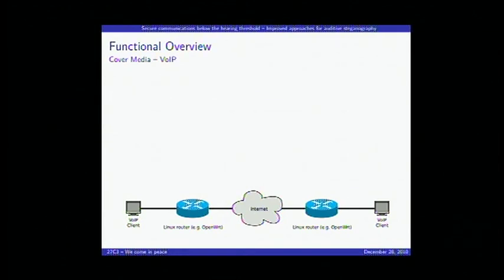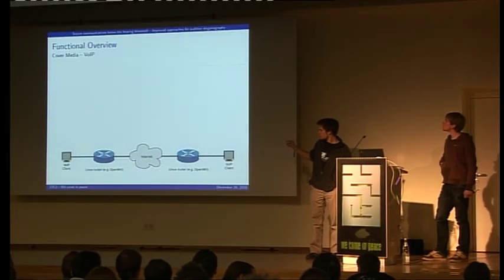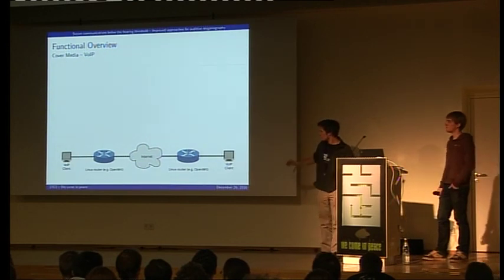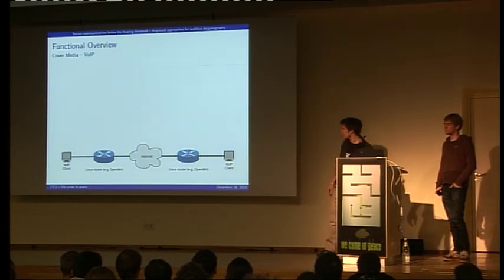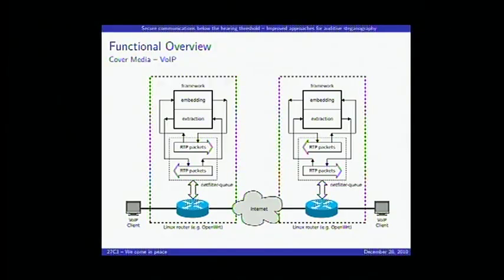For VoIP, we have two computers, each with a VoIP client installed, communicating over the internet through a Linux router. We extend that router with software to modify packets in real time. On both sides of the communication, extraction and embedding are happening — this is required since we want full duplex communication so that both sides can send information.